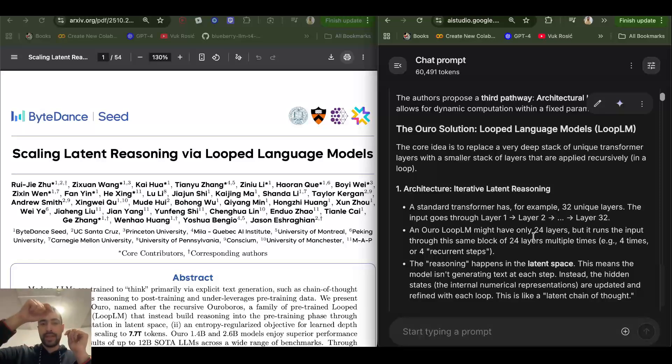Here you have input, it goes through all of the layers, which is fewer, for example 24, and then loops back again, goes again, again, again, like four times and then outputs. And the amount of times it loops is determined dynamically. So depending on the difficulty of the problem, it can think for a longer or shorter period of time.